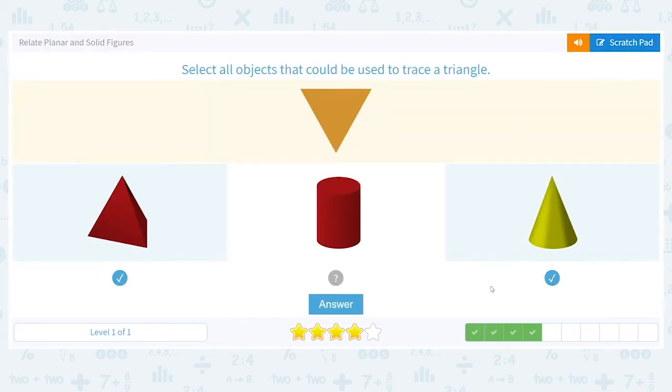That means the pyramid and the cone are the two that could be used to trace a triangle.